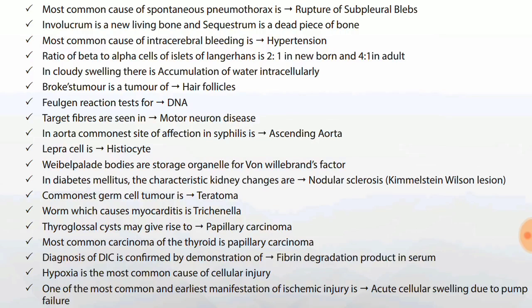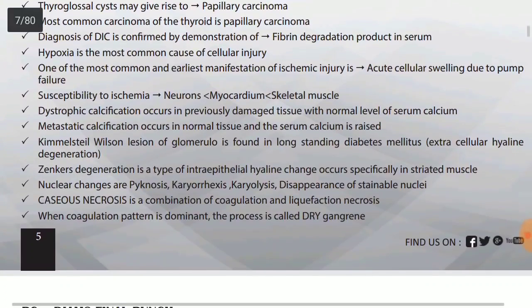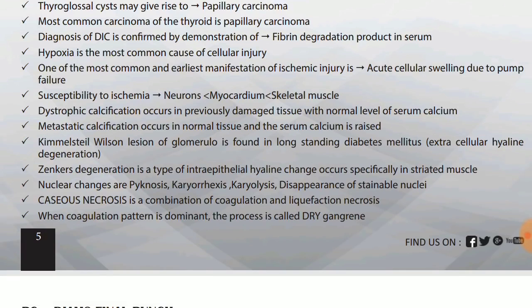Commonest germ cell tumor is teratoma. Worm which causes myocarditis is Trichinella. Thyroglossal cyst may give rise to papillary carcinoma — not medullary, just remember thyroglossal cyst can give rise to papillary carcinoma. Most common carcinoma of thyroid is papillary carcinoma.